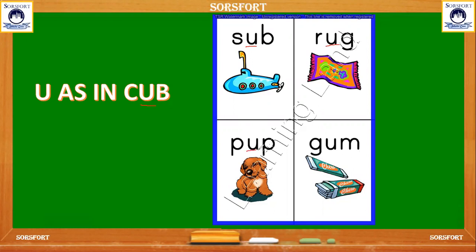G, U, M — gum. In all these words we have U in the middle of two letters. We can start reading: C, U, P — cup. S, U, B — sub. R, U, G — rug. P, U, B — pub. G, U, M — gum.